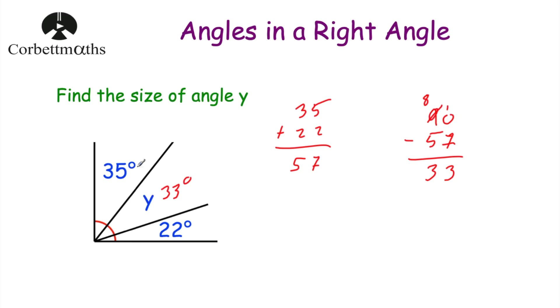We can check our answer: if we add together 35 degrees, 33 degrees, and 22 degrees we'll get 90 degrees. The angles in the right angle add together to be 90 degrees.